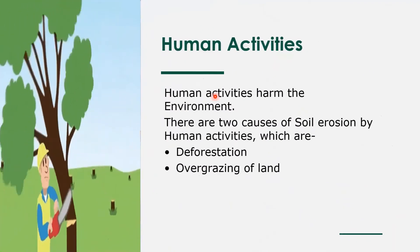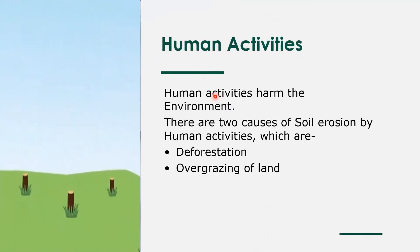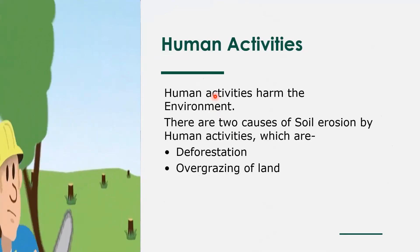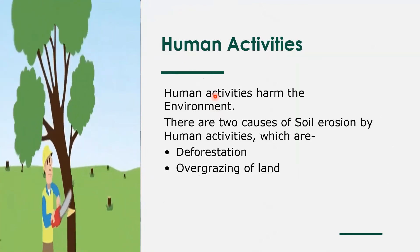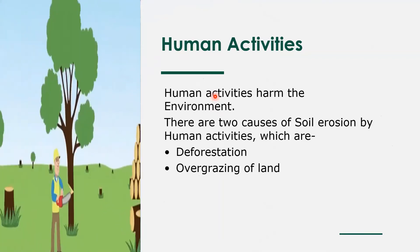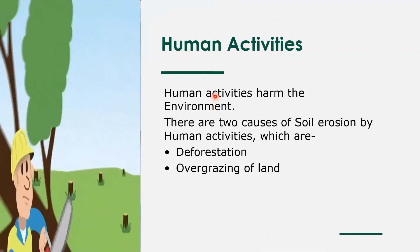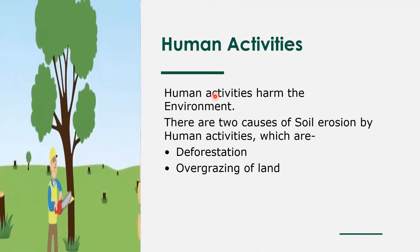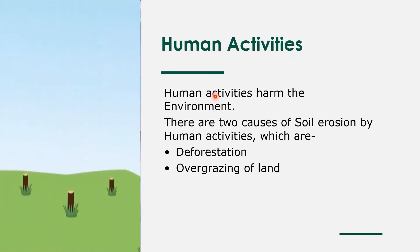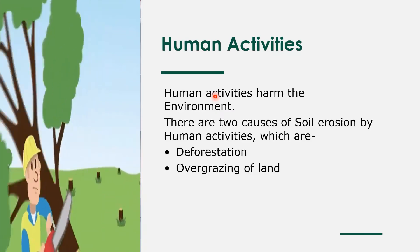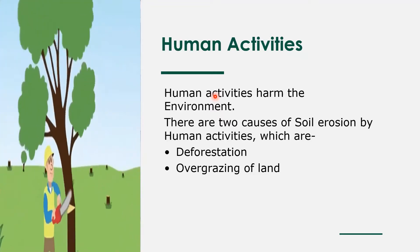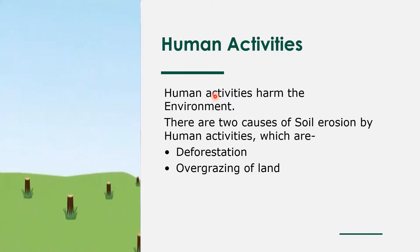Human activities. Deforestation and overgrazing of land cause soil erosion. Trees catch hold of the soil, so whenever wind and water come, they cannot take the soil easily. Thus, deforestation causes soil erosion. The grass also catches hold of the soil, so if cattle are eating the grass and after some time the land has been overgrazed, this also causes soil erosion.